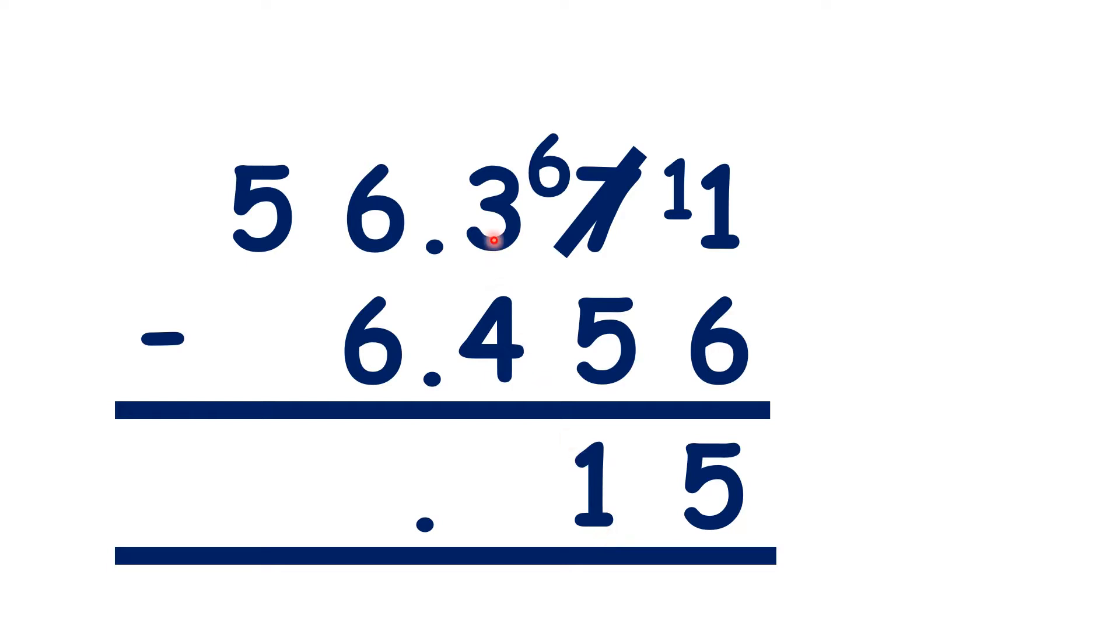But now we can't do three tenths minus four tenths, so we need to exchange with the units. Because one unit is the same as ten tenths, we can have one fewer unit and ten more tenths, which means we have thirteen tenths minus four tenths, so that's nine tenths.